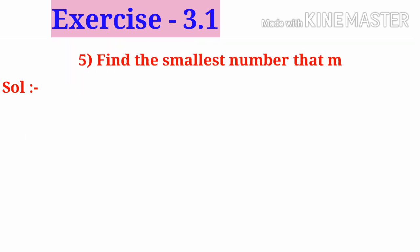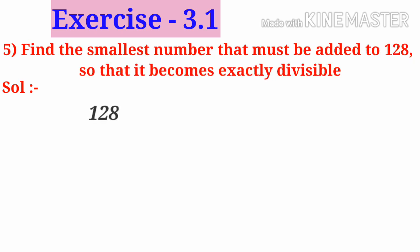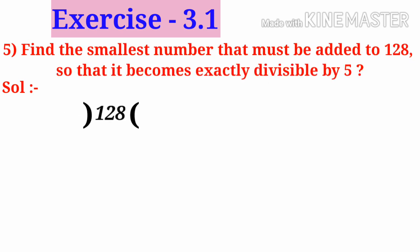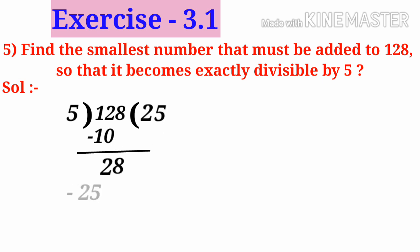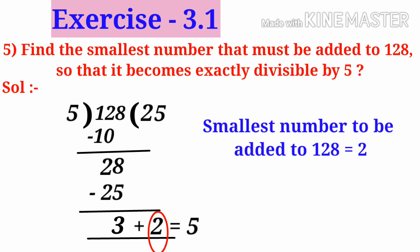Fifth problem: Find the smallest number that must be added to 128 so that it becomes exactly divisible by 5. Let us divide 128 by 5. We get a remainder of 3. In order to get remainder 0, we need to add 2 to 3 so it becomes 5, which is divisible by 5. So the smallest number to be added to 128 is 2.